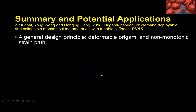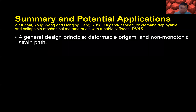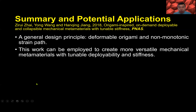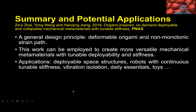In summary, we found a general design principle using deformable origami with non-monotonic strain paths to develop on-demand deployable and collapsible structures. This work can be extended to create more versatile mechanical materials with tunable deployability, stiffness, and many applications. You can check out the details in our paper. Thank you.